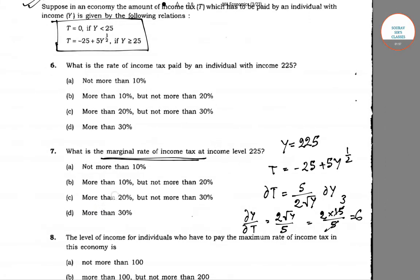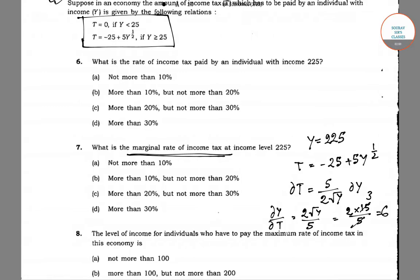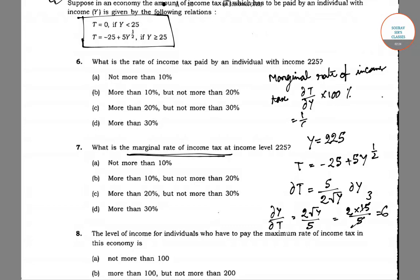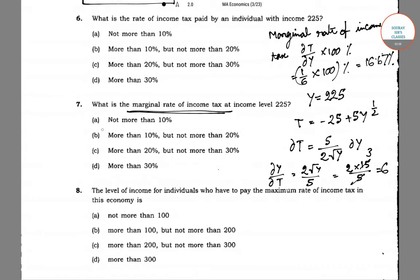Now, the formula for marginal rate of income tax is dt/dy into 100%, which is the reciprocal of dy/dt. So this equals 1/6 into 100%, which is 16.67%. Our answer is option B: more than 10% but not more than 20%.